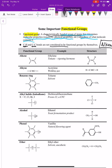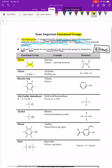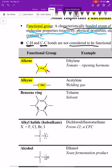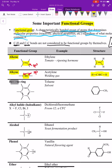The next functional group is called an alkene — that's when you have a carbon double bonded to another carbon, giving you two sp2 hybridized carbons. An alkyne is when you have a carbon triple bonded to another carbon, giving you two sp hybridized carbons. For example, acetylene, used in welding, contains a carbon-carbon triple bond.